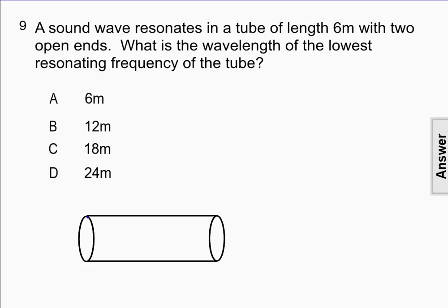So to depict that, I'm going to draw one vibrational antinode at that end, and one vibrational antinode at that end. This pattern shows two vibrational antinodes at either end, and then one node in the middle of the tube.